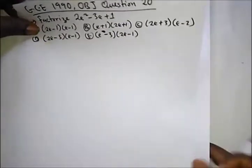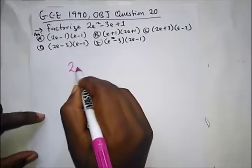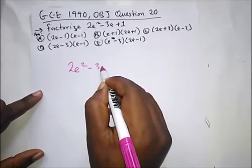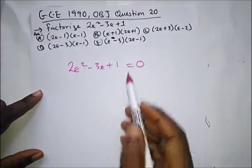Another question we have here from GCE OBJ question. It says factorize 2e square minus 3e plus 1 equal to 0. So here our factor.